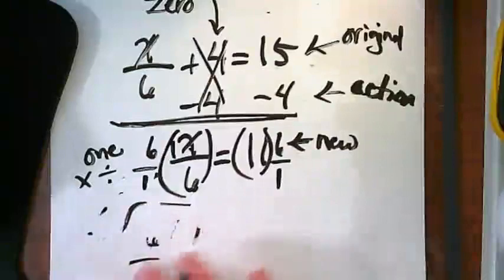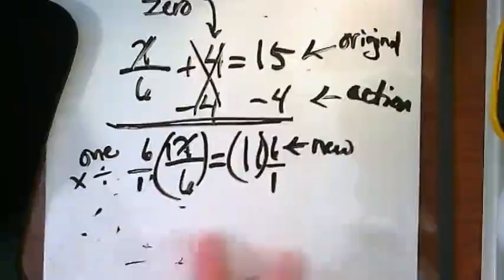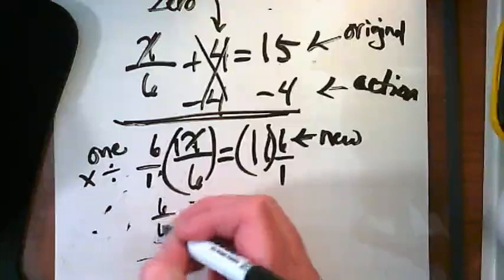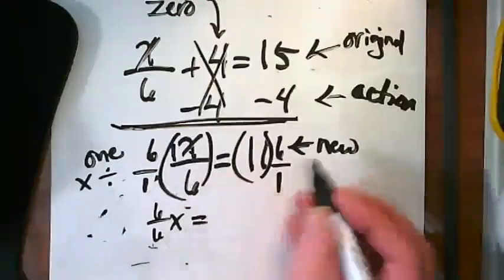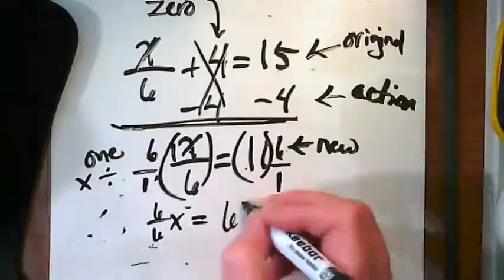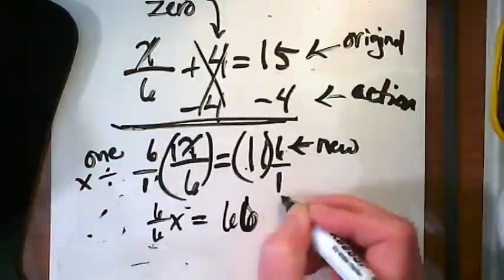That becomes 6 times 6 is 66, whoops, divided by 1.